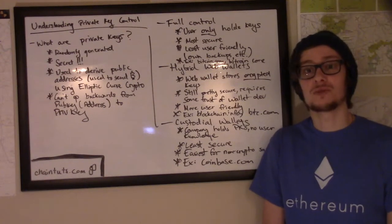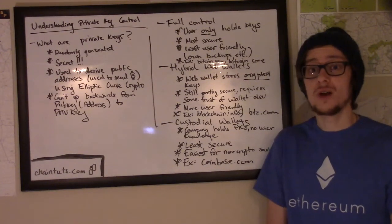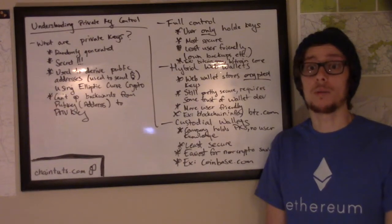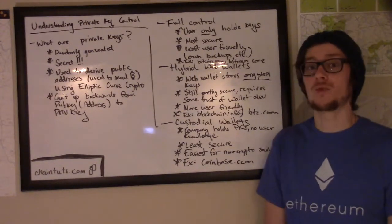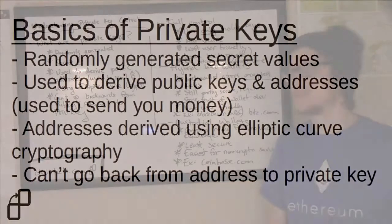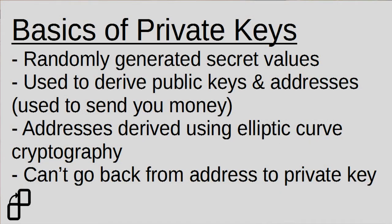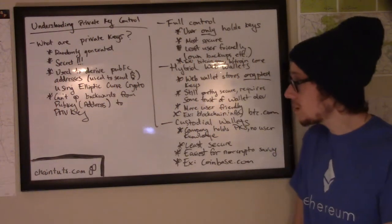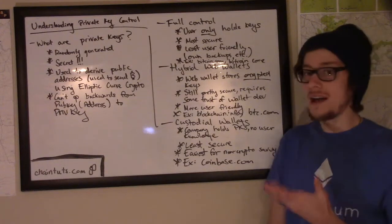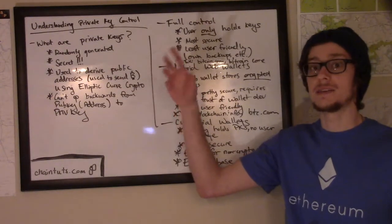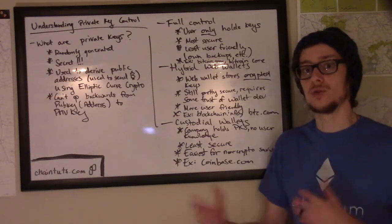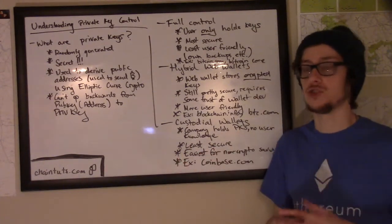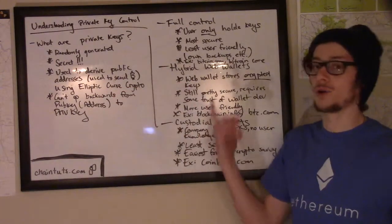Before we can discuss different security models around private keys and wallets, we first need to talk a little bit about what a private key is. A private key is a randomly generated, and most critically, secret piece of information used to derive your addresses for your wallet and essentially allow you to prove that you own some amount of digital funds stored on a blockchain. These private keys are used to derive your public keys and addresses for a cryptocurrency using an algorithm called elliptic curve cryptography.